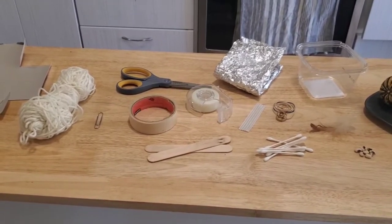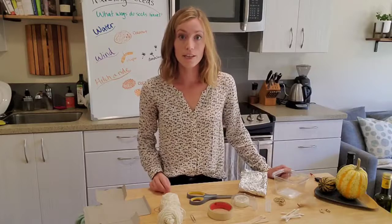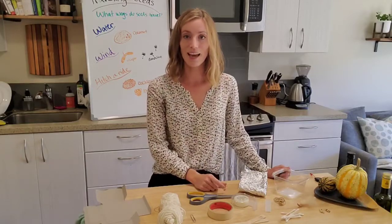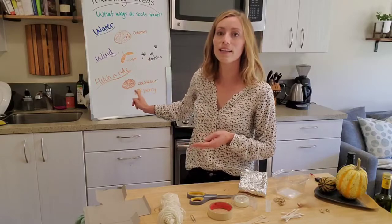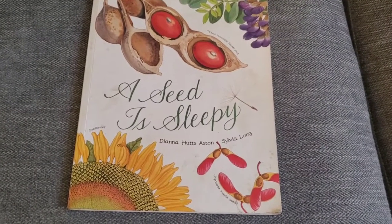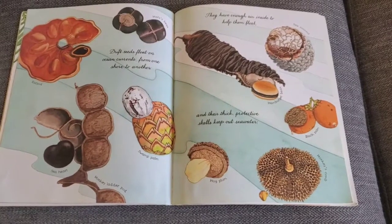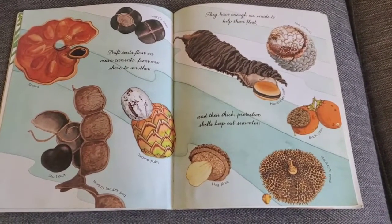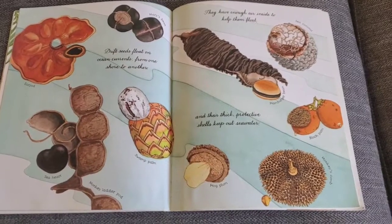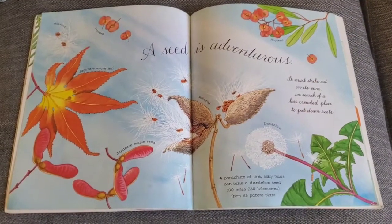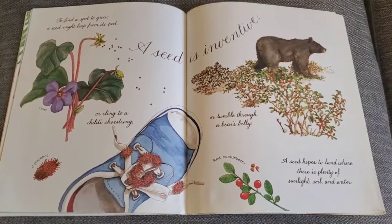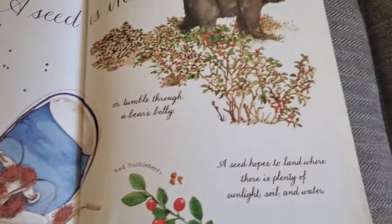Using these materials to add on to my seeds — these black-eyed peas — I'm going to try to make a seed that floats in water, flies through the wind, and can hitch a ride on me all the way across the room. For some inspiration I'm going to be looking at this book called 'A Seed is Sleepy.' It has a page about seeds that float in water — they use thick protective shells to keep out seawater and have enough air inside to help them float. It also shows seeds that fly through the air and seeds that hitch a ride, maybe on a child's shoestring or through a bear's belly.